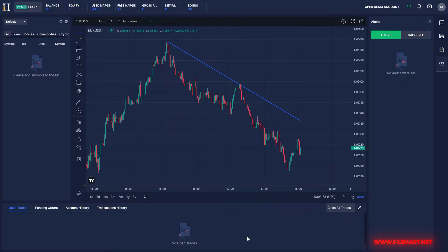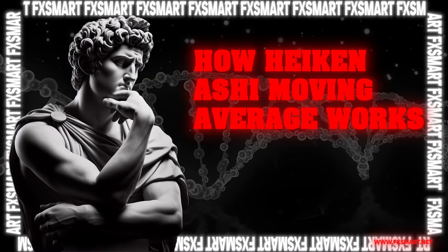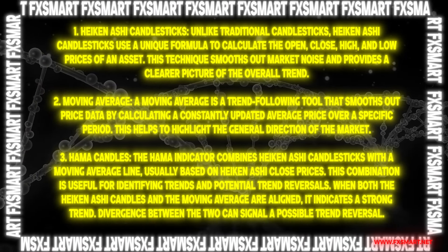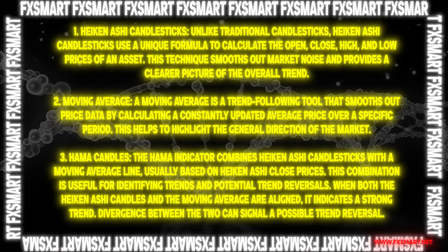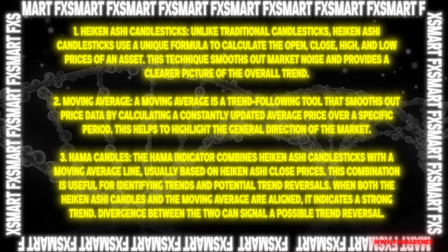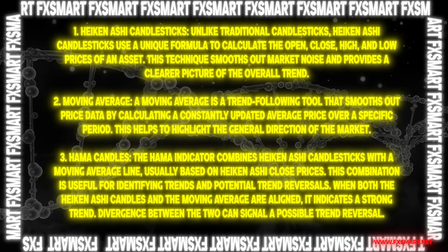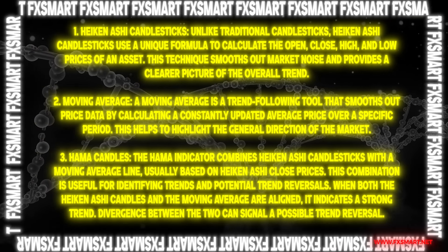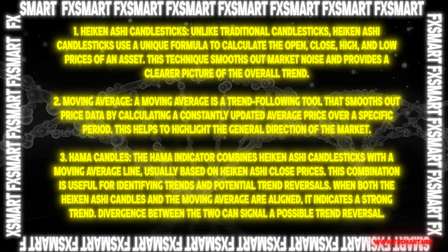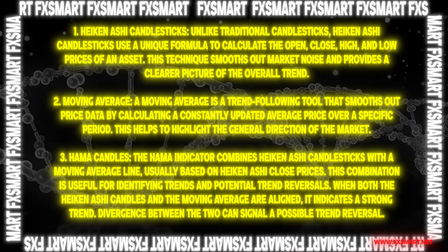The functioning of the Heikin-Ashi Moving Average (HAMA) indicator can be divided into three key components. First, Heikin-Ashi candlesticks: unlike traditional candlesticks, Heikin-Ashi candlesticks use a unique formula to calculate the open, close, high, and low prices of an asset. This technique smooths out market noise and provides a clearer picture of the overall trend.